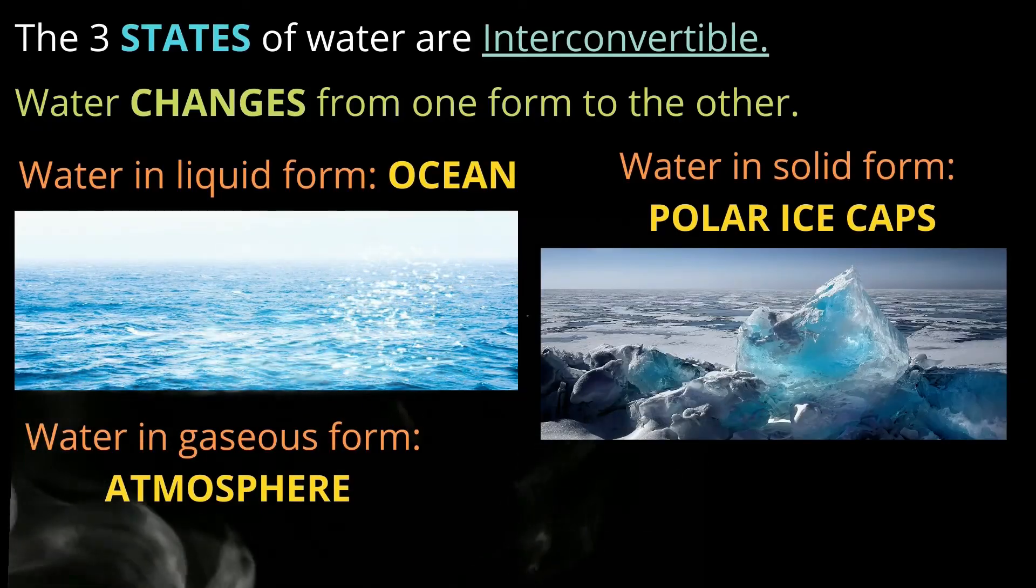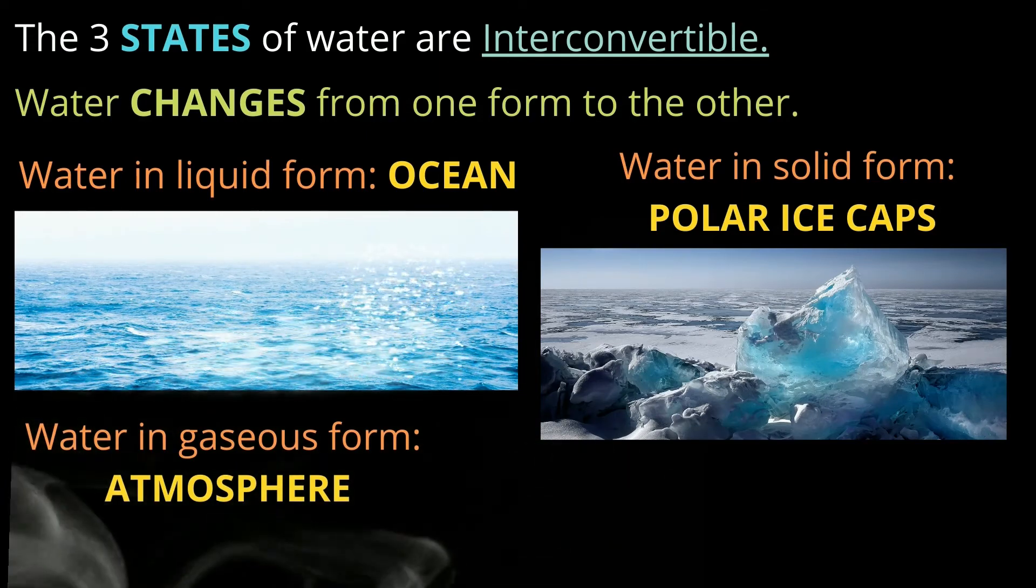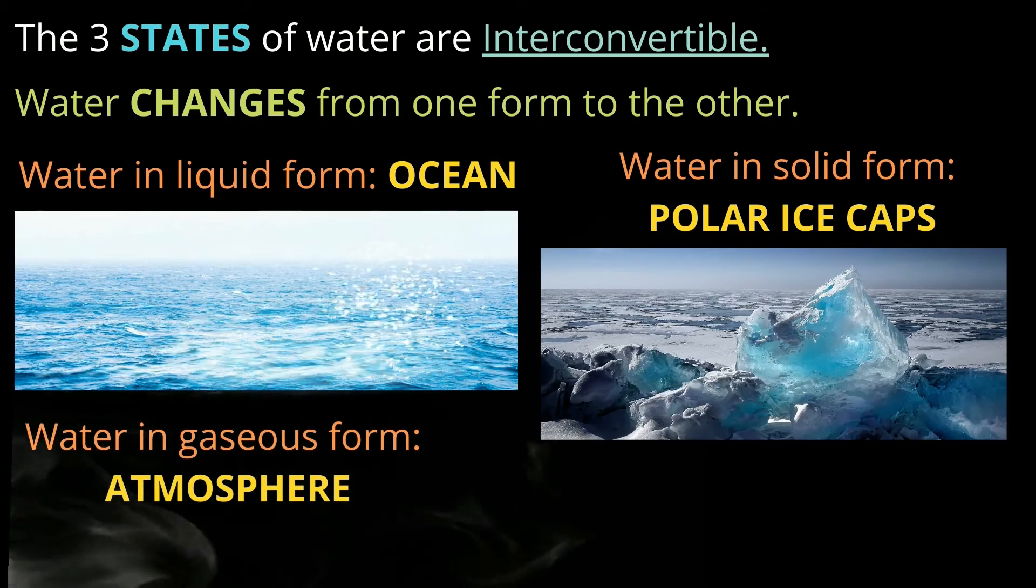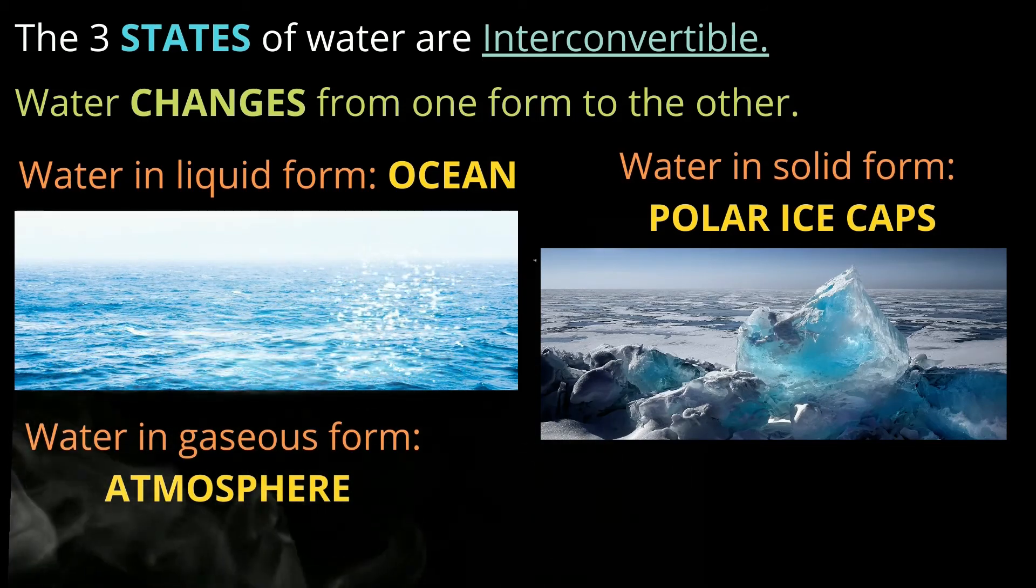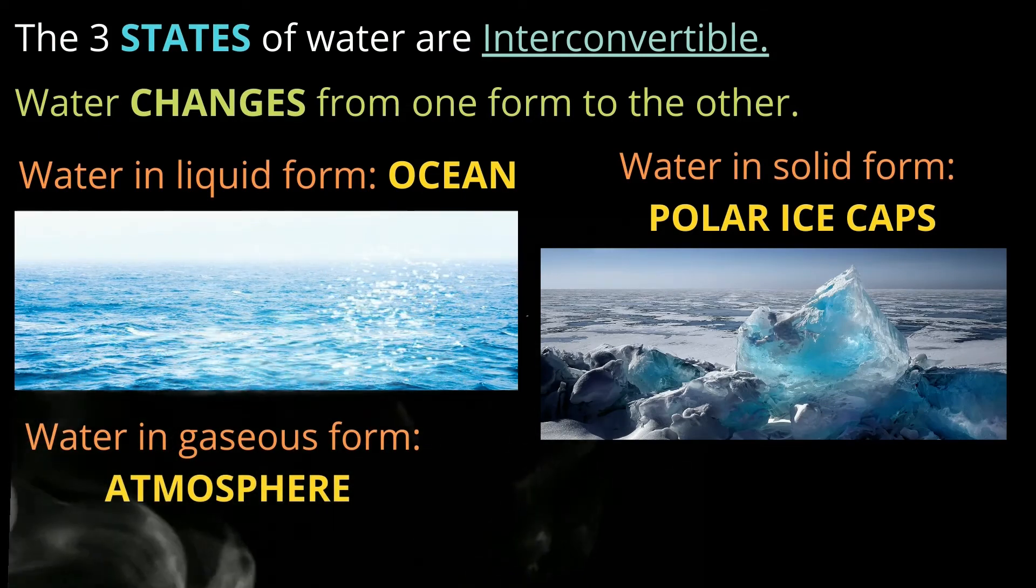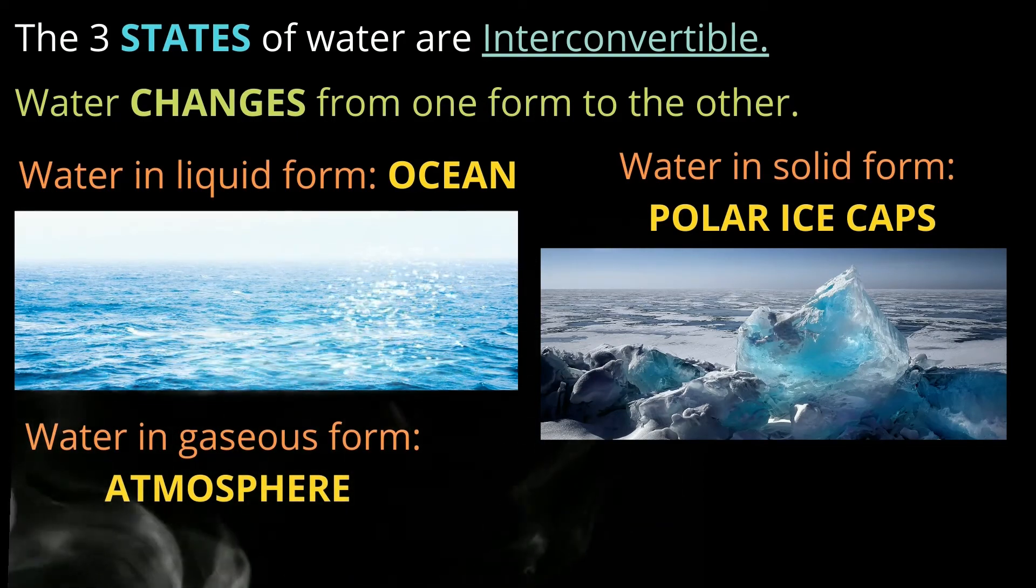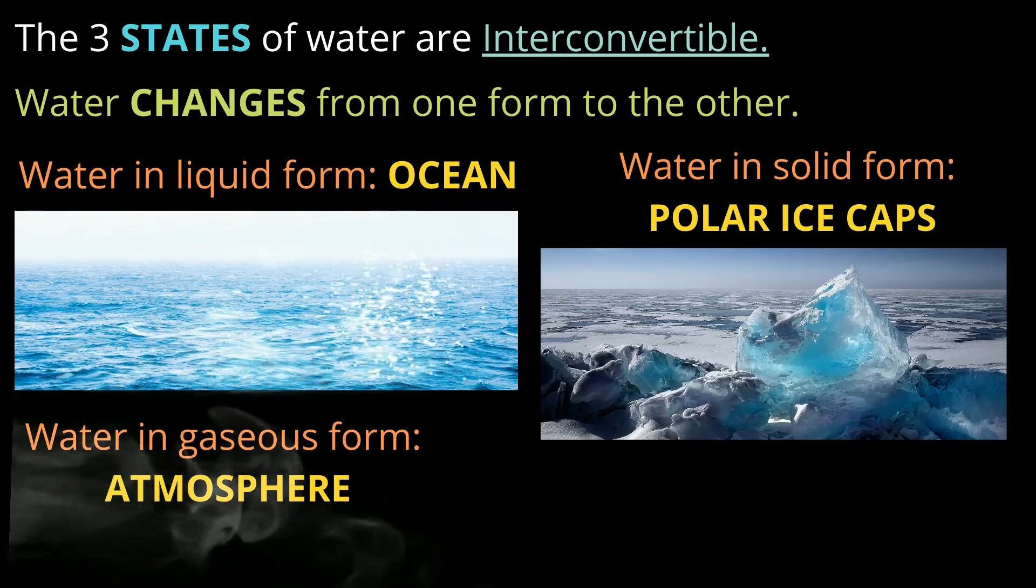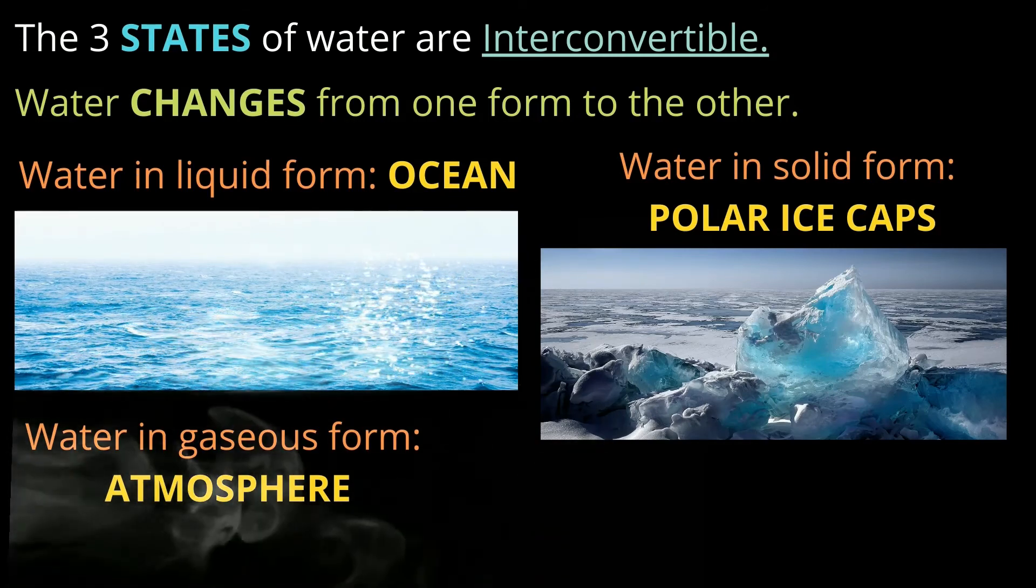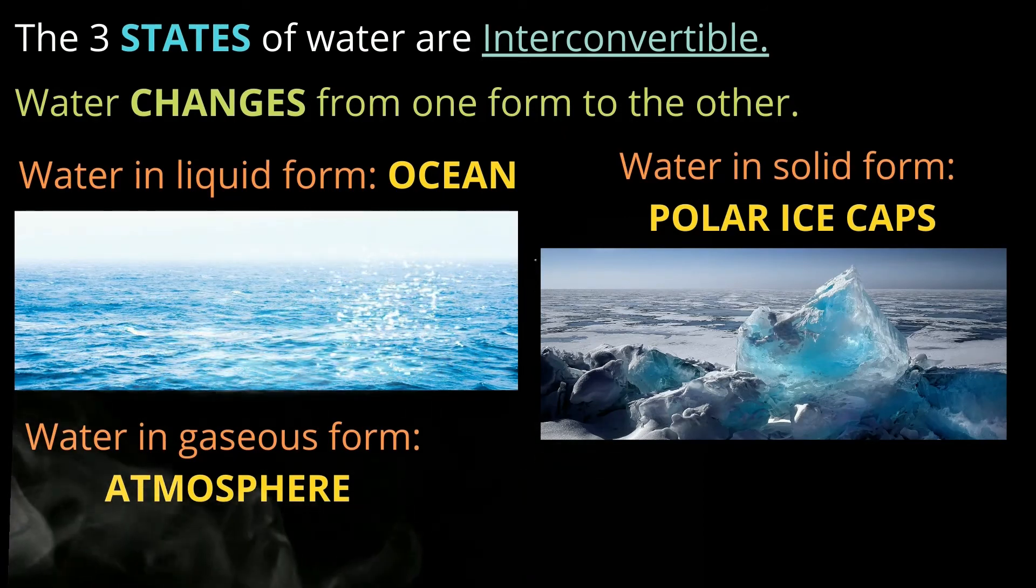The three states of water - what are the three states? Solid, liquid, and gas. These three states of water are interconvertible. What's the meaning of interconvertible? It means it can change. Water changes from one form to the other. Take an ice cube - it's water in its solid state. But when it melts, what's happening? Its form is changing. The state is changing.